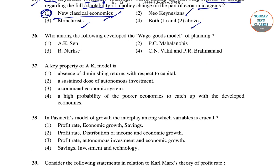Now we'll go to question number 36: who among the following developed the wage goods model of planning? Four options are given: AK Sena, Narski, PC Mahalanobis, and CN Vakil and PR Brahmananda.